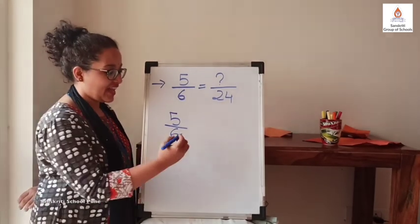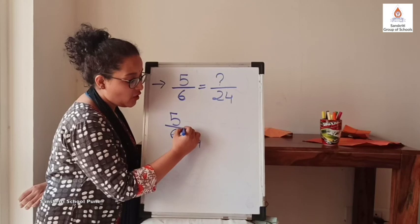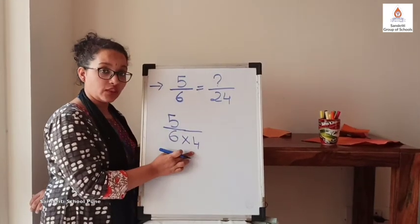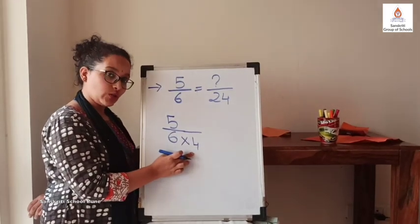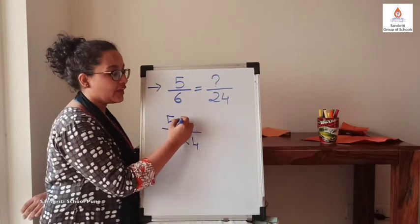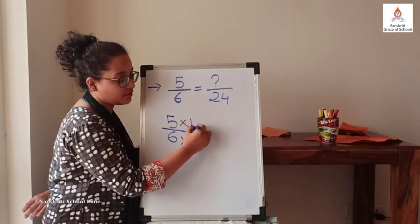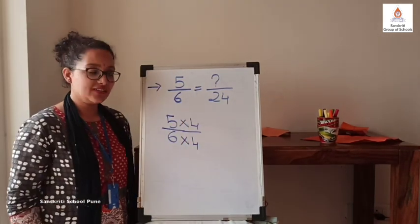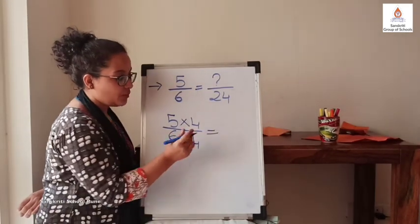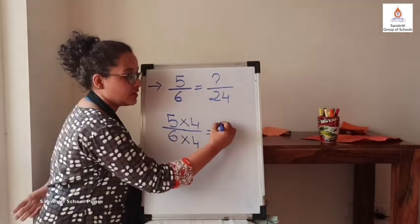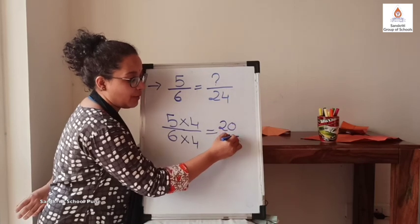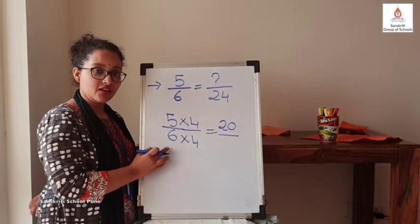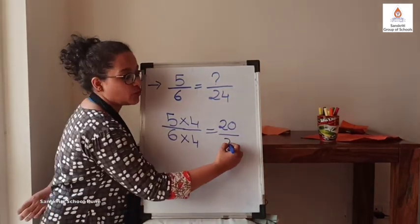Yes, it's 4. So, when you are multiplying denominator with 4, we should also multiply numerator by 4. Right? So, what is the numerator formed? 20 upon denominator 6 fours 24.